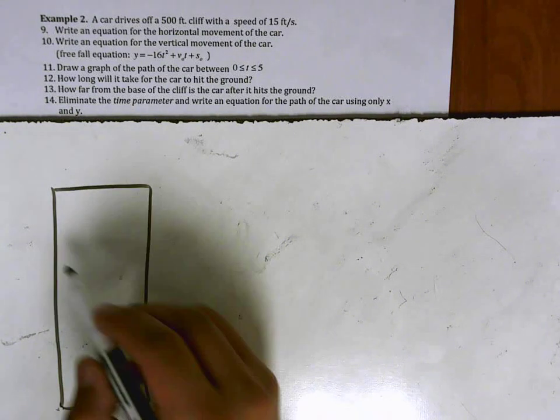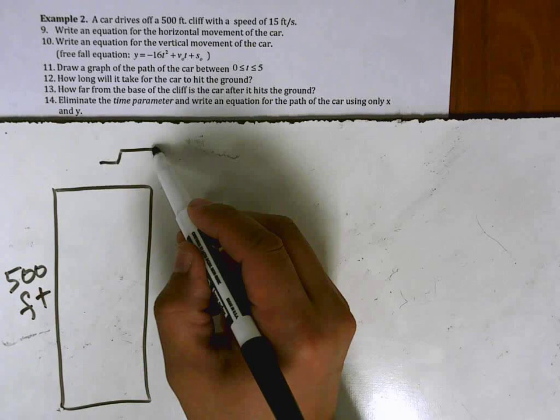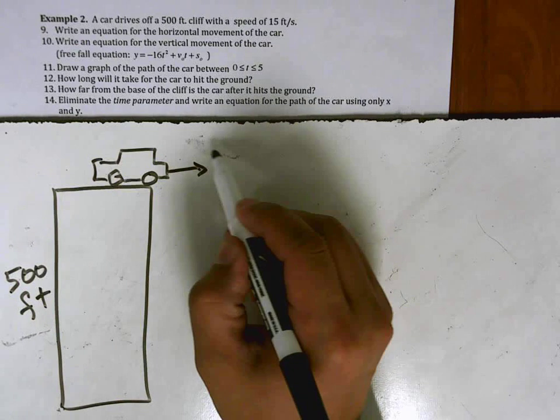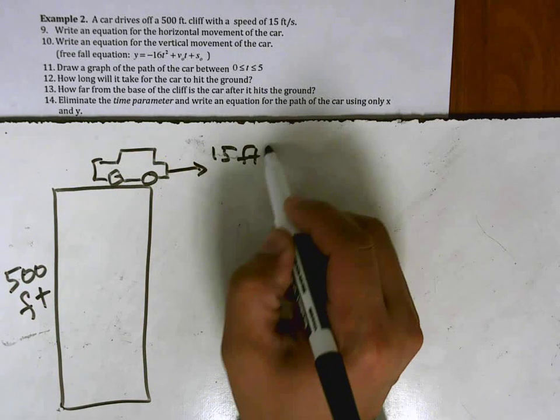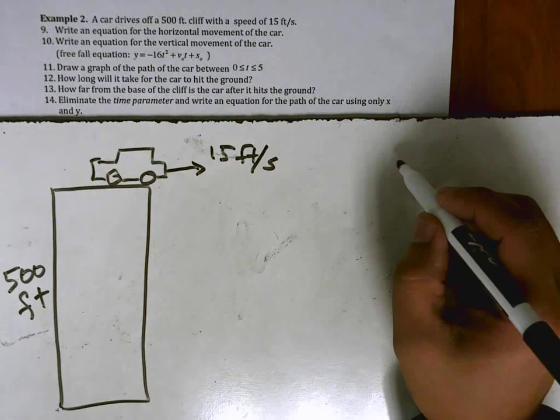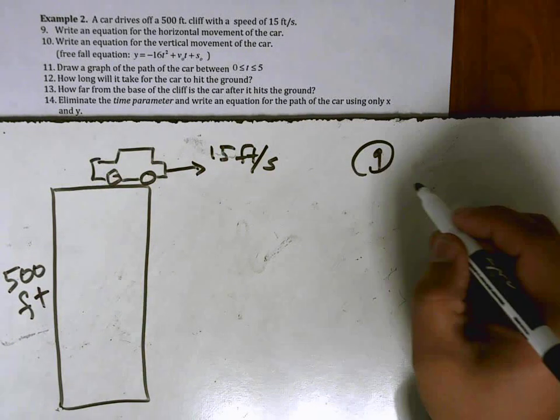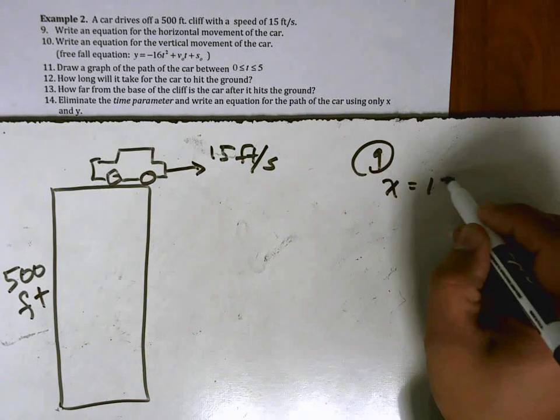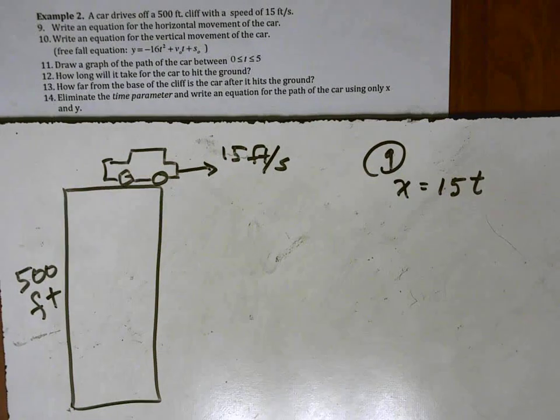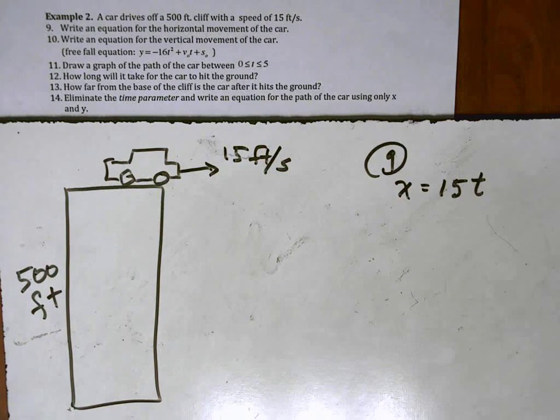So you've got this cliff and that's 500 feet and you've got a car up here and it flies off this cliff at a speed of 15 feet per second. We want to know the horizontal movement of the car. In this case it would simply be that it's going forward at 15 feet per second. So x is equal to 15 times t. So x here represents the horizontal position of the car in feet and t here is time in seconds.